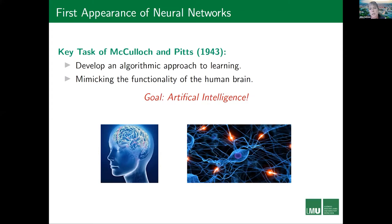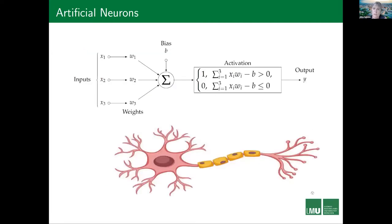Everything started with McCulloch and Pitts in 1943. They wanted to design algorithms for artificial intelligence, and the way they wanted to approach this was by mimicking the functionality of the human brain. The brain typically consists of different neurons which are connected. A neuron gets signals in its dendrites — sometimes they are amplified — then in the soma those signals are collected, and the neuron decides whether and at which strength to fire or not.